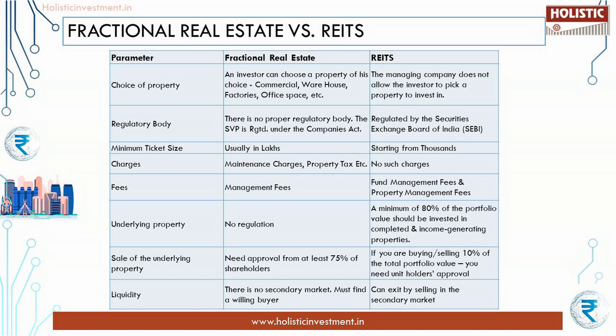Under fractional real estate, maintenance fees and property charges are levied, whereas there are no such charges in REITs. In fractional real estate they charge a management fee; in REITs they charge a fund management fee and property management fee. In REITs, a minimum of 80 percent of the portfolio value must be invested in completed and income-generating properties — there is no such regulation for fractional real estate. If there is a proposal to sell the underlying property, fractional real estate requires approval from 75 percent of shareholders, whereas in REITs you need unit holders' approval if buying or selling 10 percent of the total portfolio value. Fractional real estate has a liquidity question mark, whereas in REITs you can exit by selling in the secondary market.